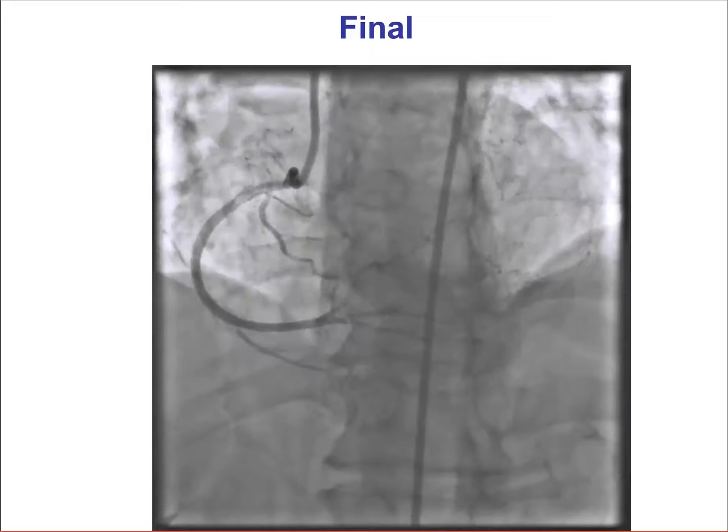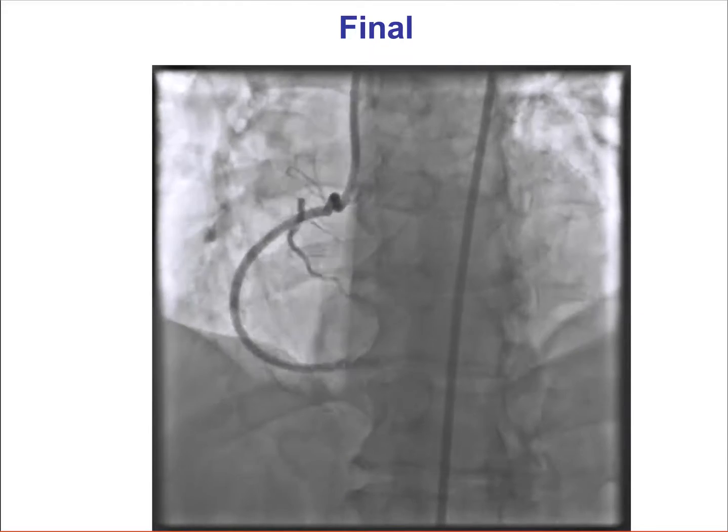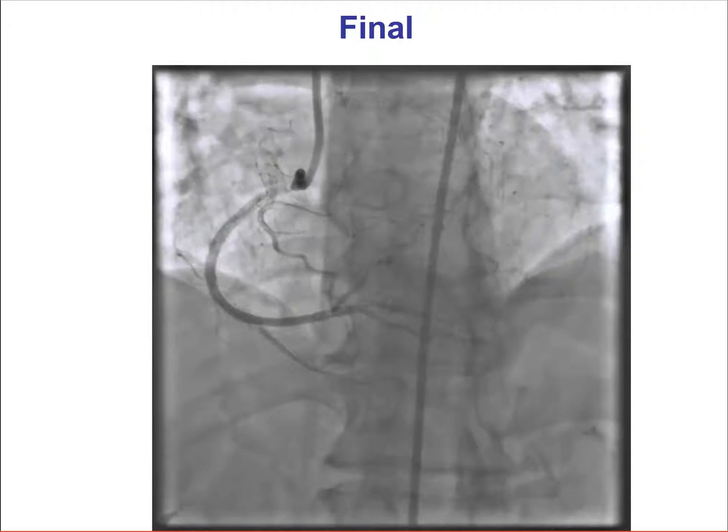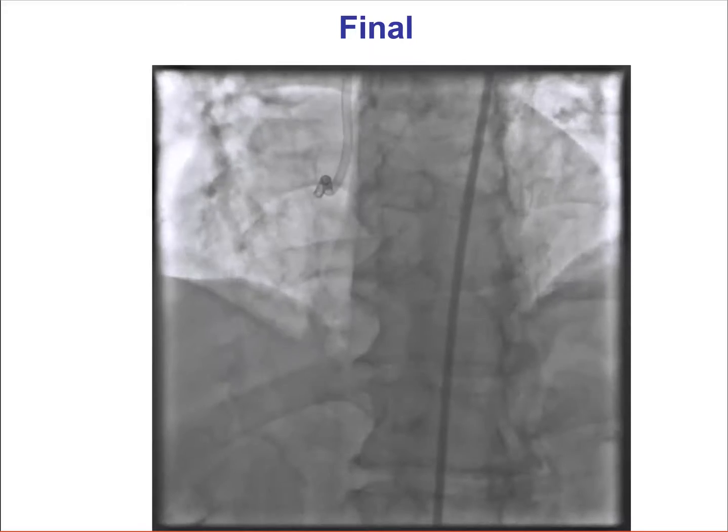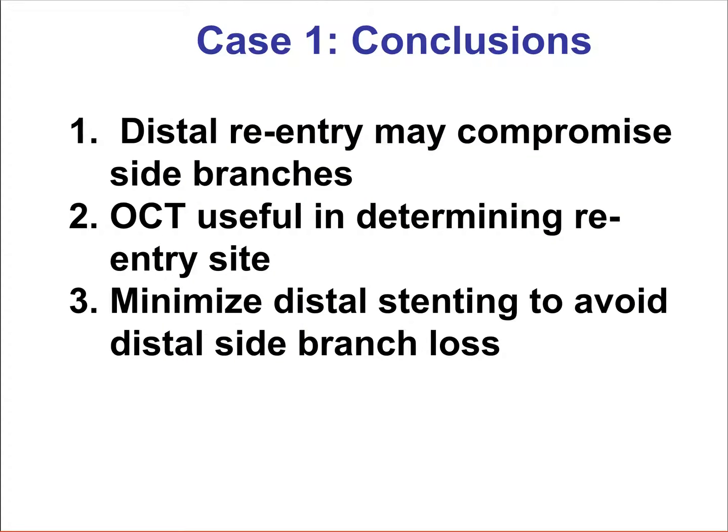Fortunately, after inflation with the 1.5 millimeter balloon, TIMI-3 flow was restored in all three distal branches and the patient was asymptomatic. Hence, no further stent implantation was performed. In summary, this case highlights: first, that distal reentry may compromise side branches; second, that OCT can help determine the exact location of the reentry site; and third, that minimizing the length of distal stent placement may help avoid losing distal side branches.